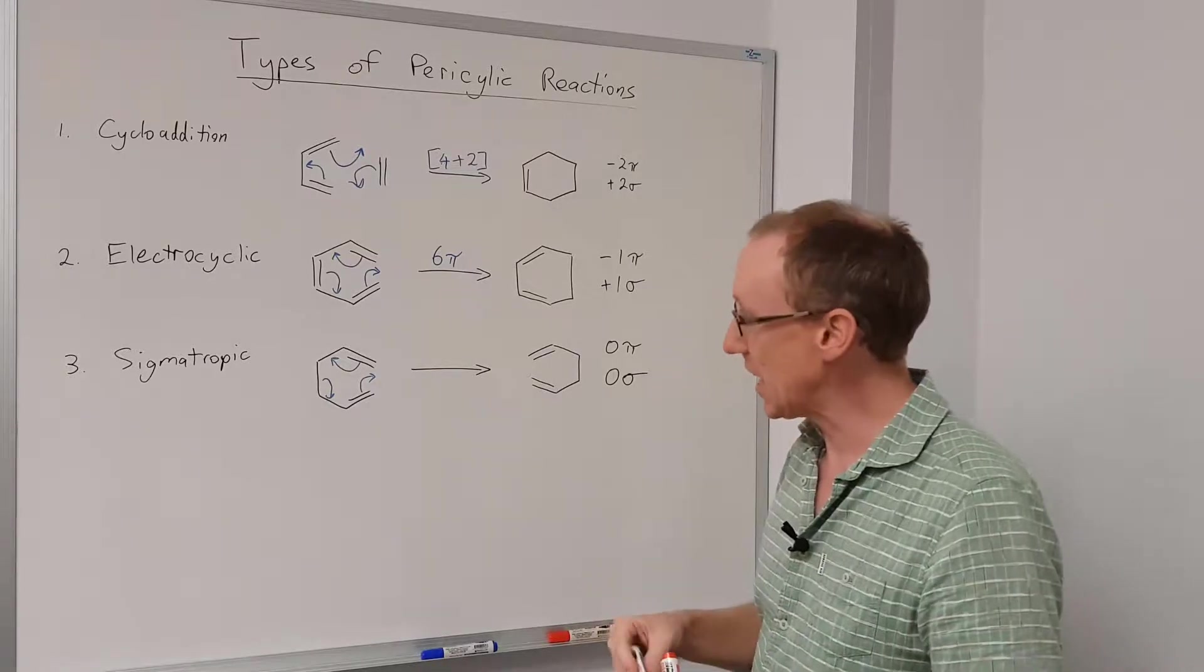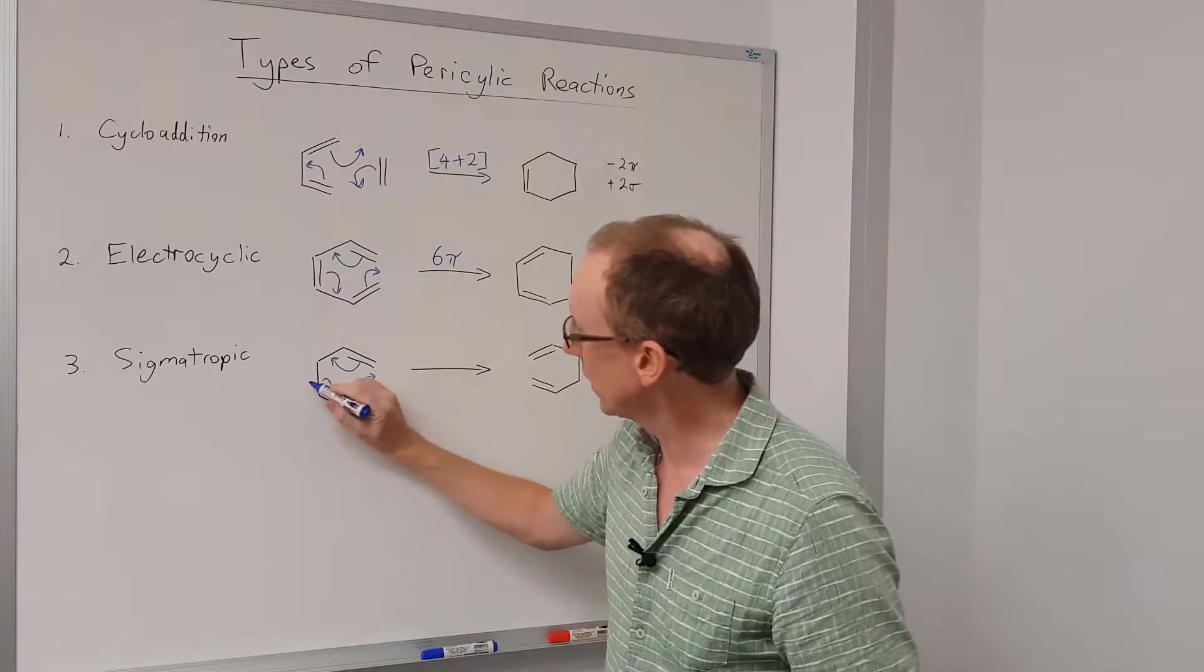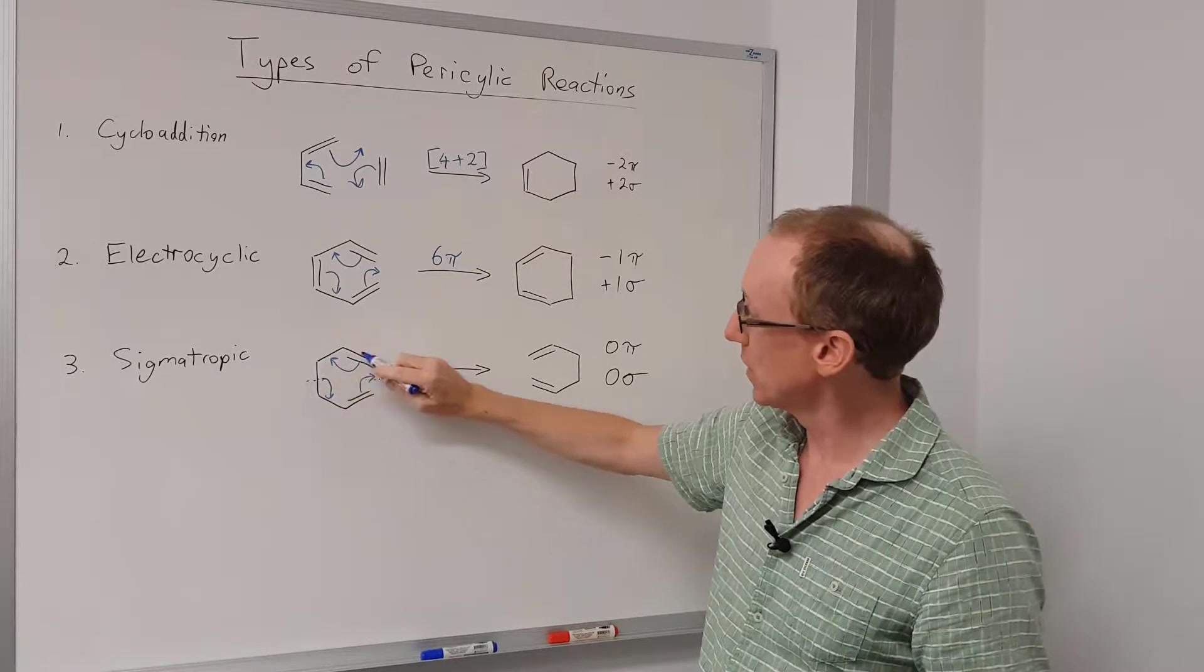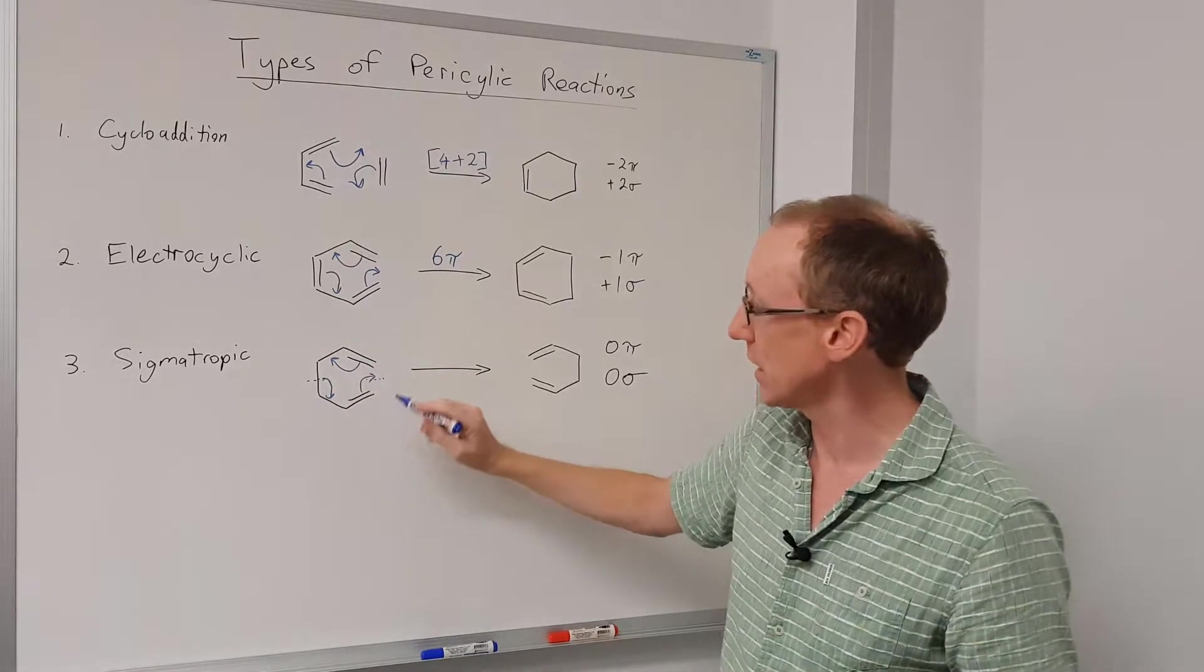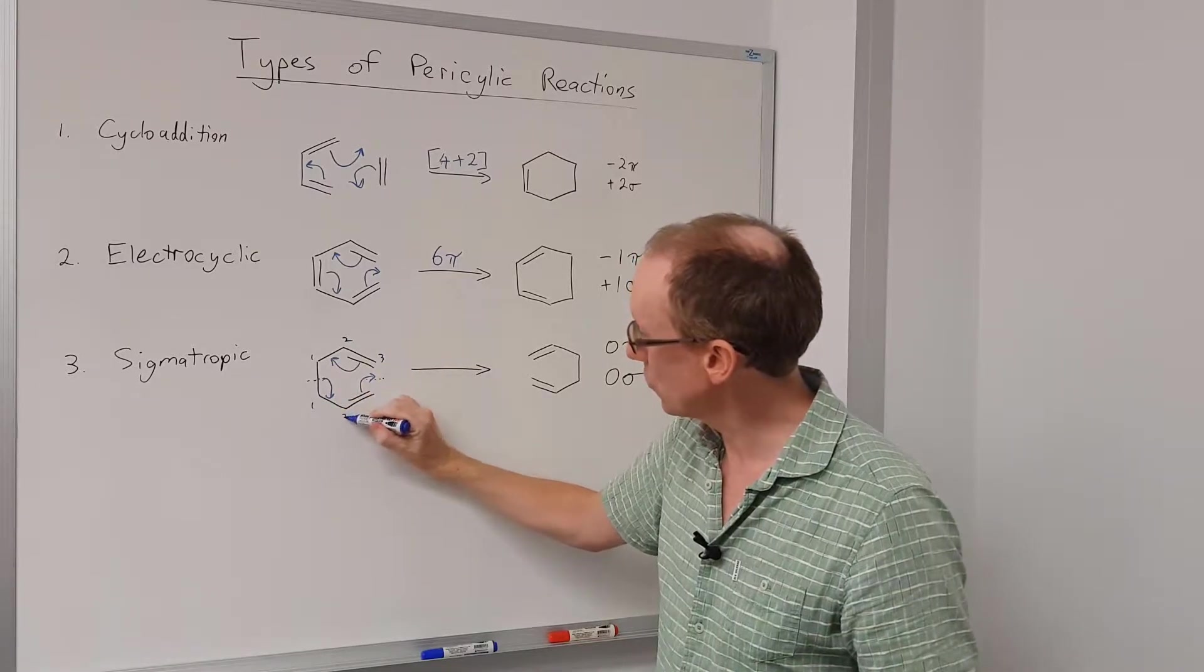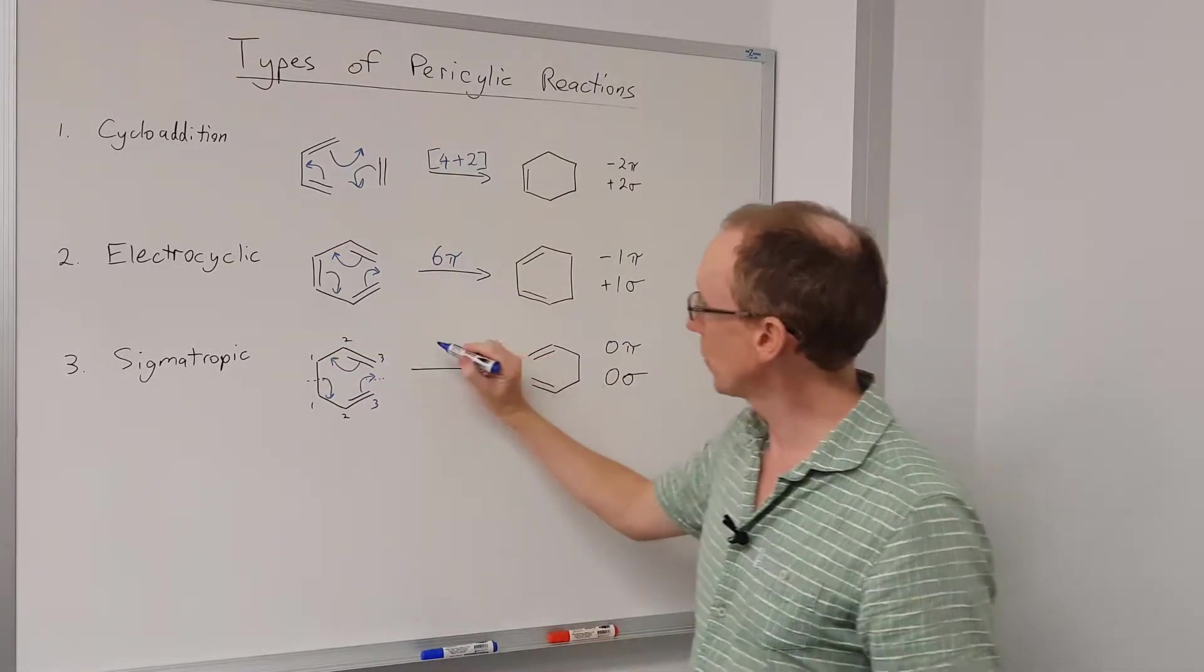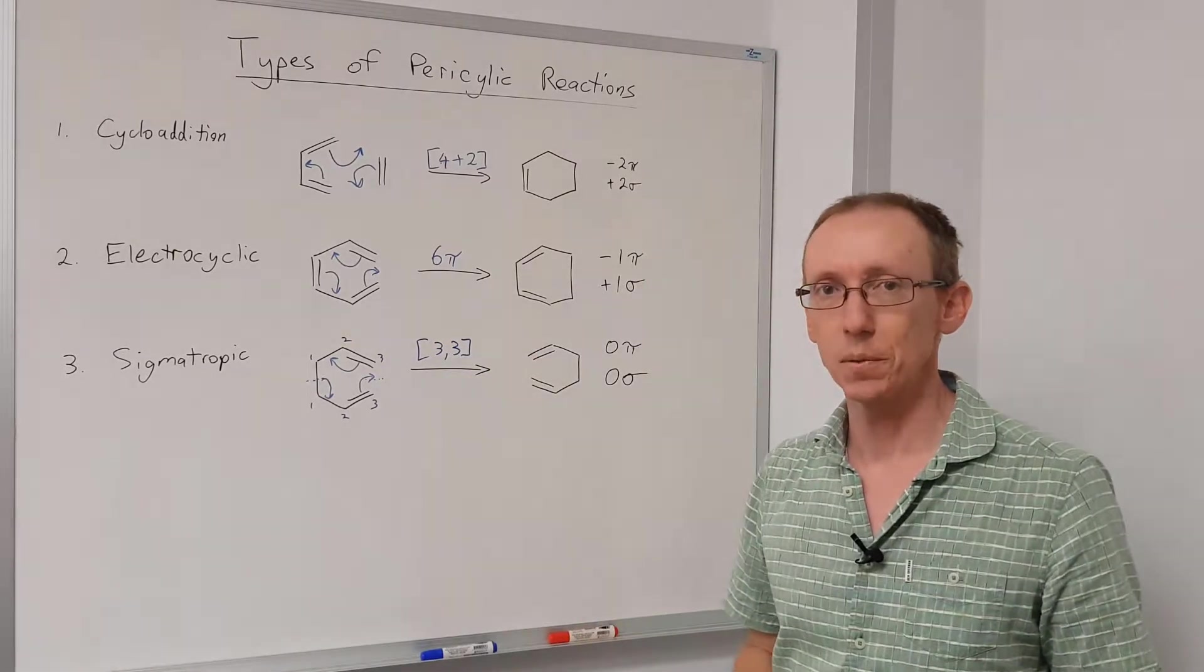Okay, so how do we name a sigmatropic rearrangement? We look at where the bonds are being broken and where they're being formed, and we number each side, numbering the atoms involved in that contiguous ring that's formed at the transition state. So here we have one, two, three, and here we have one, two, three. So there's three atoms in each side of this rearrangement, and so we would call this a 3,3 sigmatropic rearrangement.